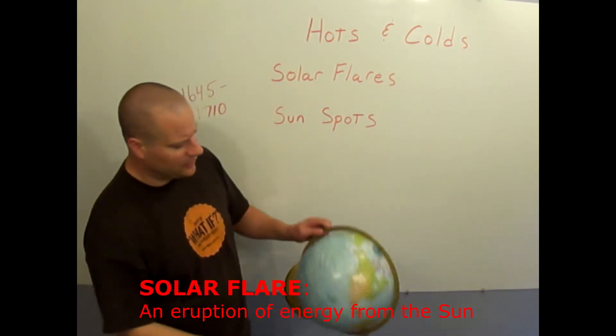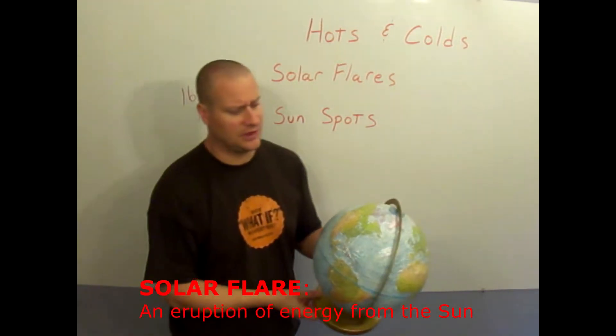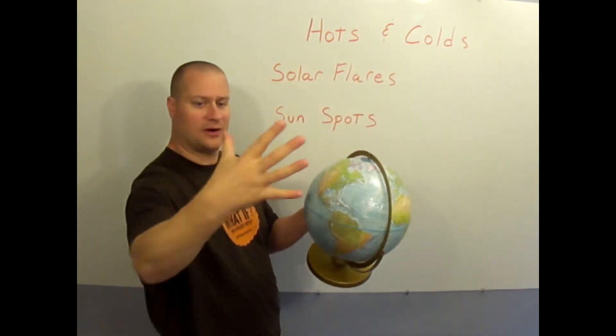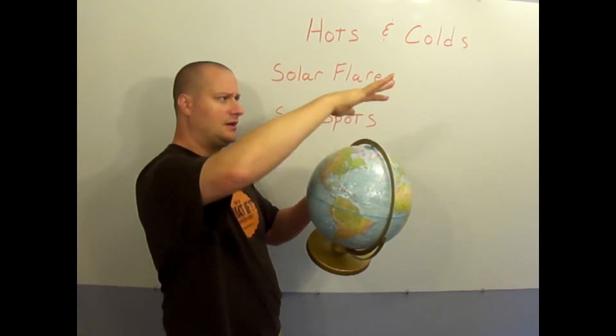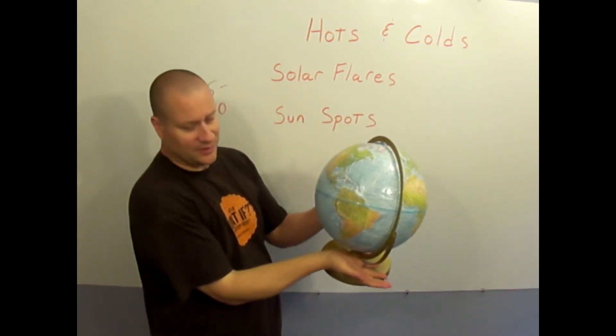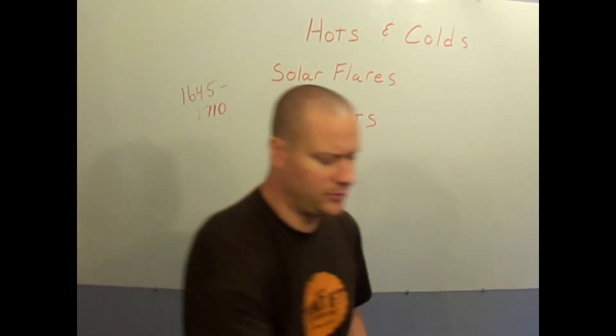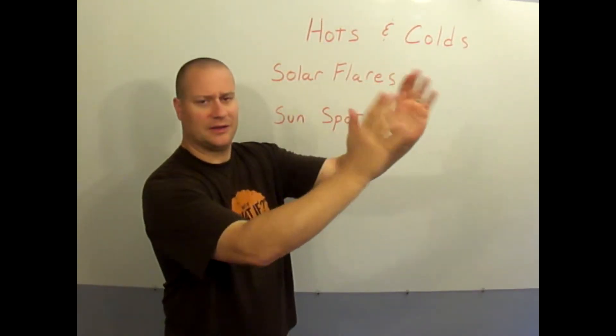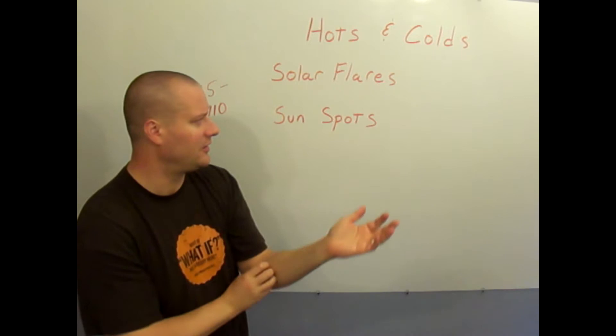Sometimes maybe you've heard of the northern lights, where the earth has a gravitational pole that will take these particles as the wave comes flying towards the earth. It will take the particles and bring them to the two poles, the southern and northern pole, and it creates this multicolored shimmering lights as the particles settle back down to earth on the top and the bottom.